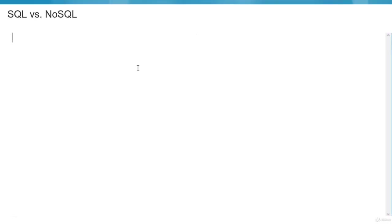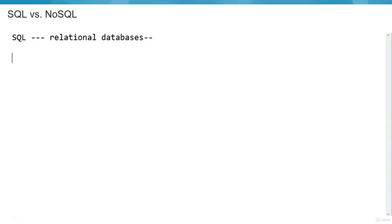Let's understand the difference between SQL and NoSQL databases. SQL databases are generally relational databases, meaning every entity has a relation to every other entity. For example, we can have columns like customer name, order, color, and customer ID. From different sources, data with these four types of information always comes in and resides in one particular table.